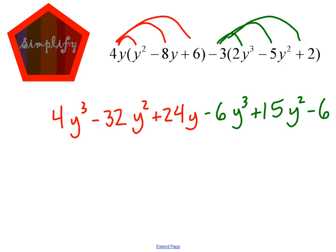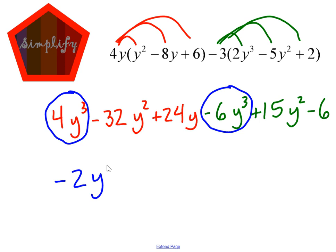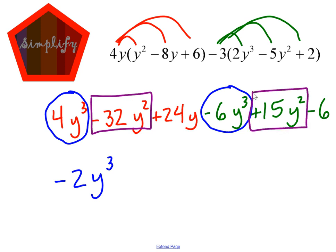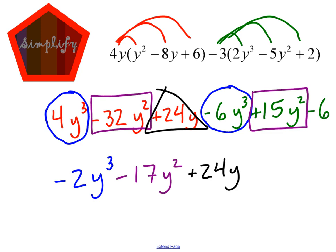Go ahead and see if we have any like terms. My highest degree term is a y cubed. I do have another y cubed, so I have 4y cubed minus 6y cubed — that's going to be negative 2y cubed. I have negative 32y squared and 15y squared; adding those together gives negative 17y squared. I have plus 24y, and I have a negative 6. No other like terms, so I am done with that problem.